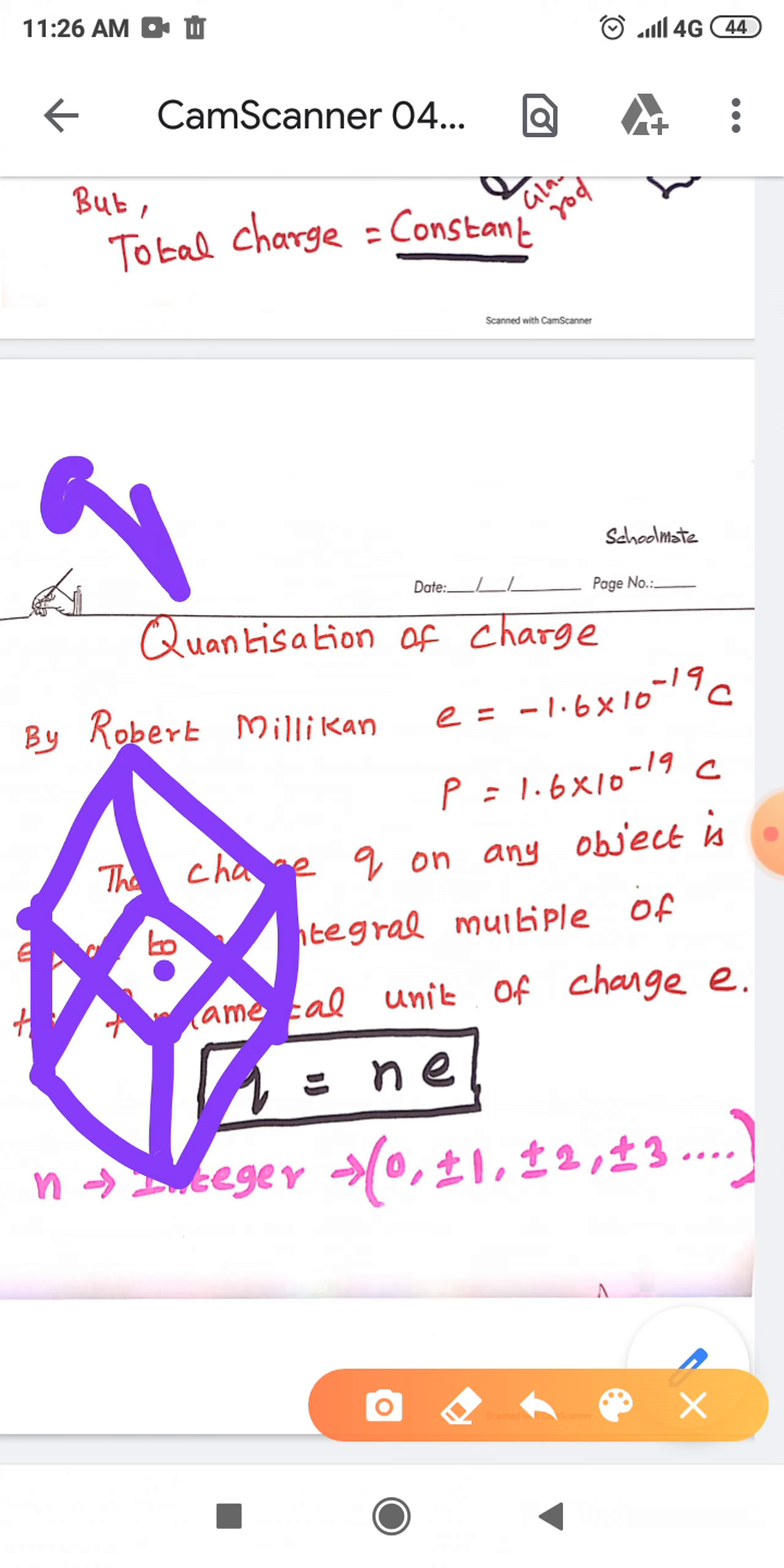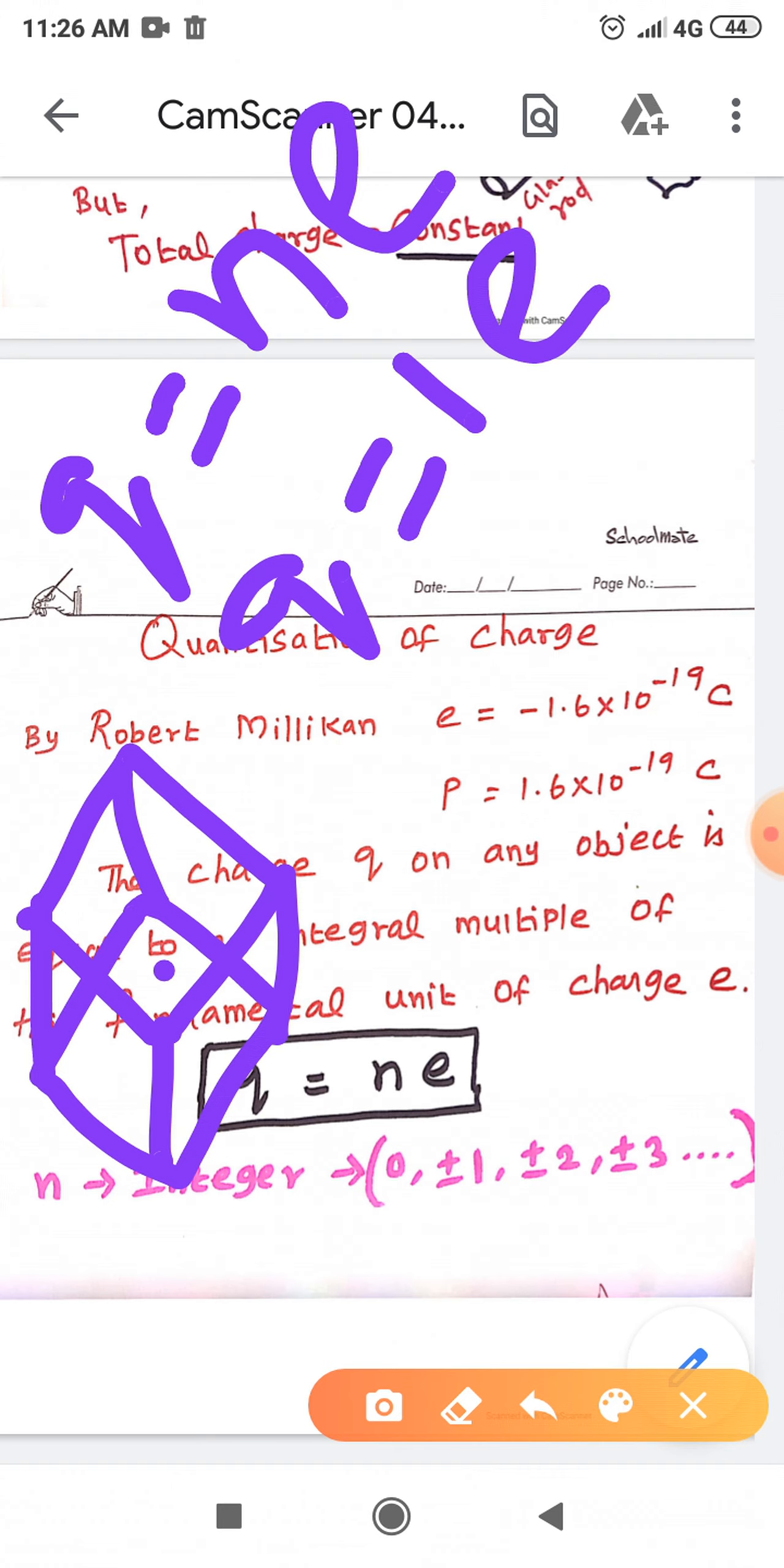To calculate, you have to use Q which is equal to NE expression. In this expression, you substitute N value equal to 1. Therefore, Q is equal to 1 into E, and Q which is equal to just E. So the charge value Q is equal to minus 1.6 into 10 power minus 19 coulomb. The charge of the domain is minus 1.6 into 10 power minus 19 coulomb.